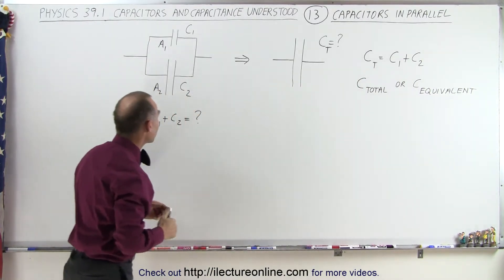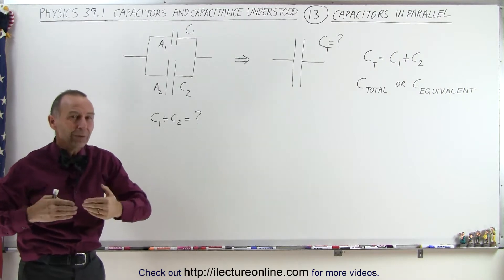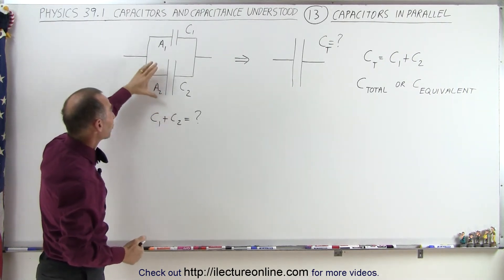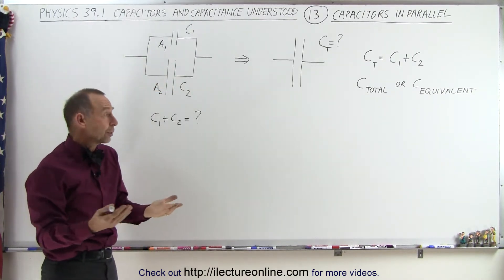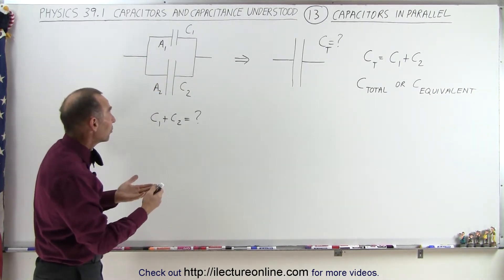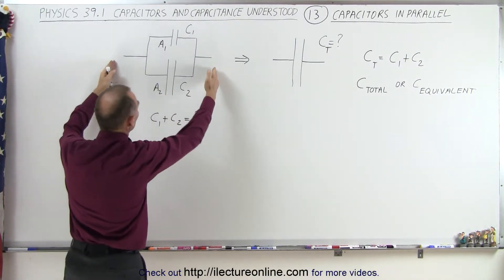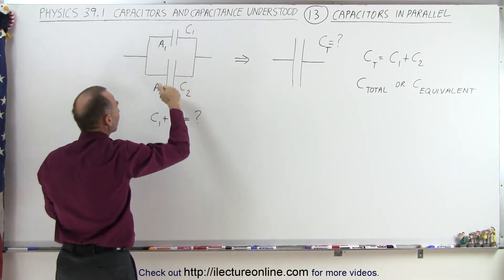Here we have two capacitors. I drew them differently to indicate graphically that capacitor 2 has a larger plate area than capacitor 1. A larger plate area indicates a larger capacitance. They're connected in parallel, which means if we connect this to a battery, charges can go on either one of the two capacitors.